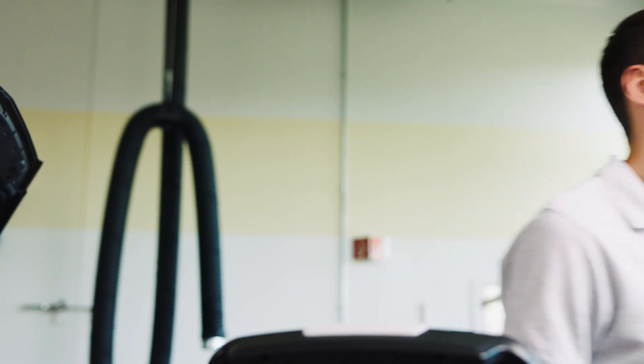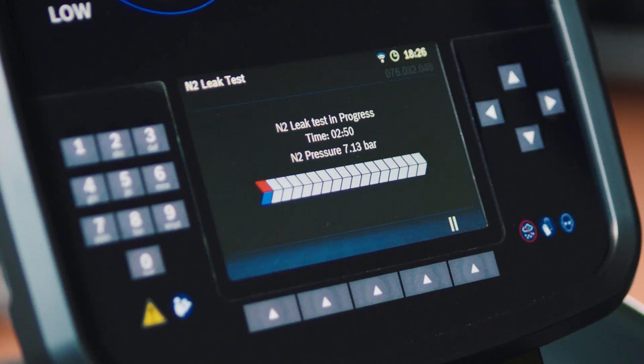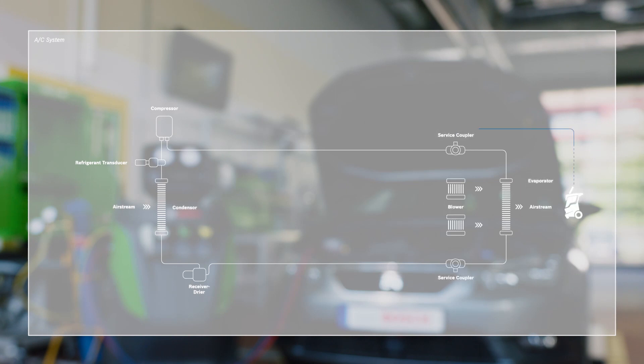After performing a vacuum phase, the nitrogen will automatically flow through the blue and red service hoses and pressurize the whole system. Then the unit starts to monitor and check the pressure values for a preset time.